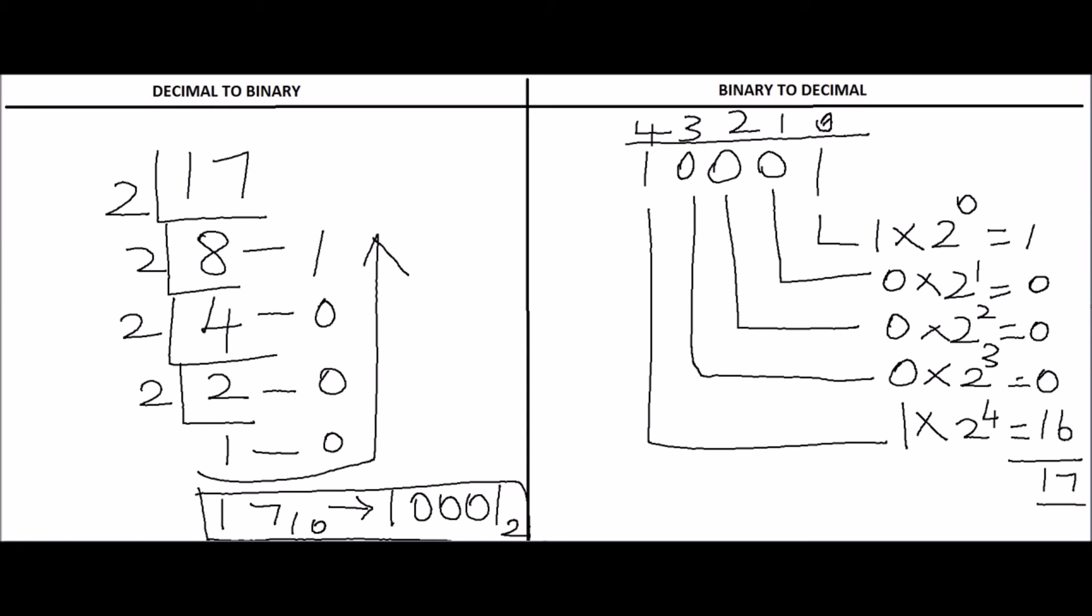So the decimal equivalent of this 1, 0, 0, 0, 1 is 17. So you have to put the base 10 here.